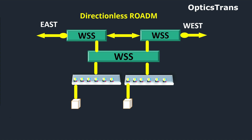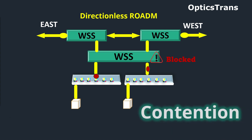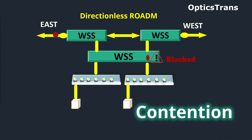For example, if a service provider adds a red wavelength in the east direction, then a red wavelength cannot be added to any other direction from that directionless module. This can lead to wavelength blocking scenarios. This is called contention.